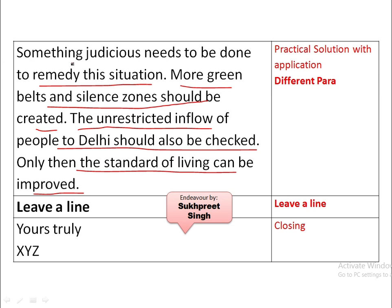To recap the solution: 'Something judicious needs to be done to remediate the situation — more green belts and silence zones should be created, and the unrestricted inflow of people to Delhi should be checked.' If the inflow is controlled, the government can take care of the existing sizable population. If population keeps increasing, there will be more pressure on resources, which will eventually compromise the standard of living.